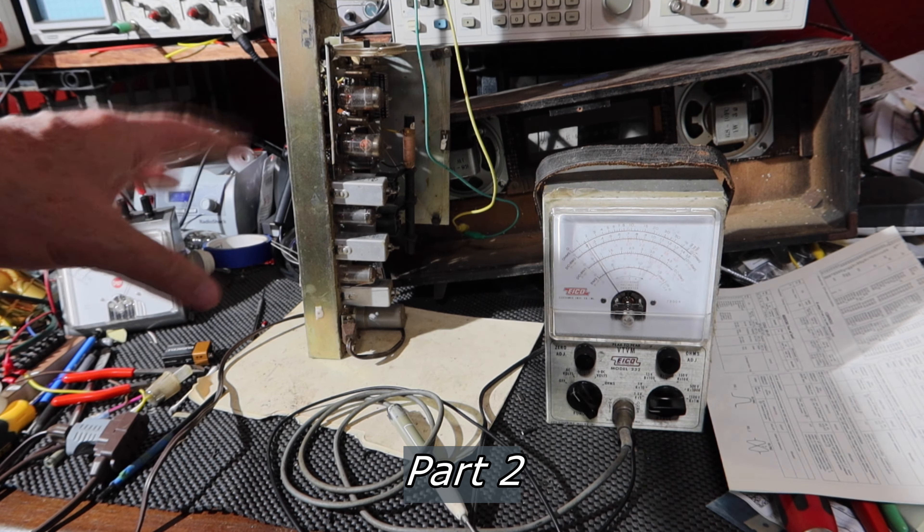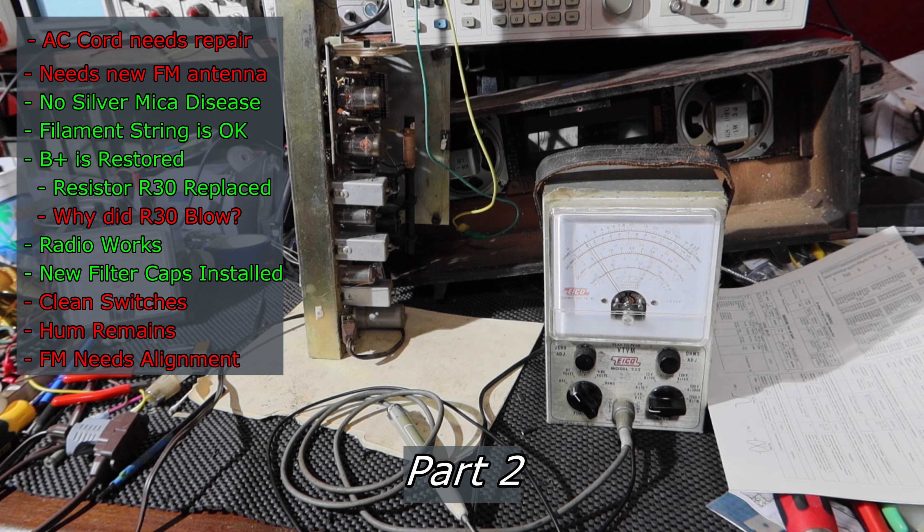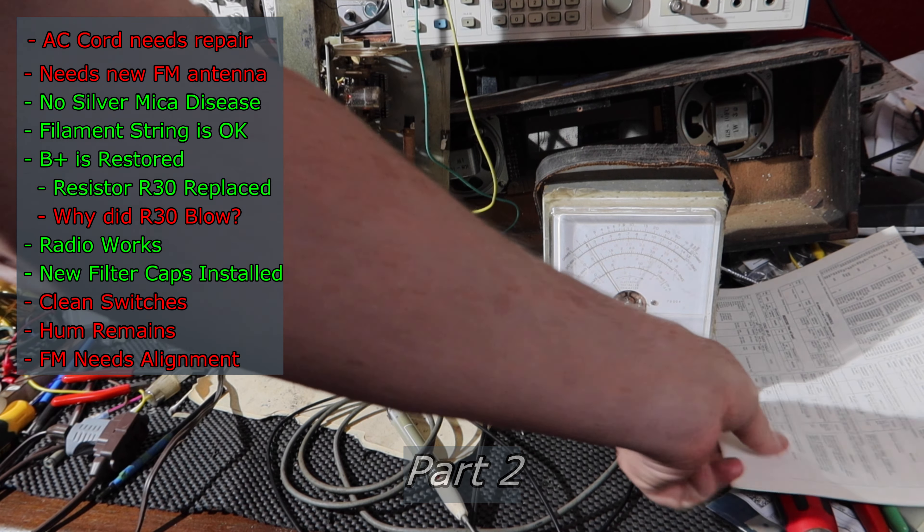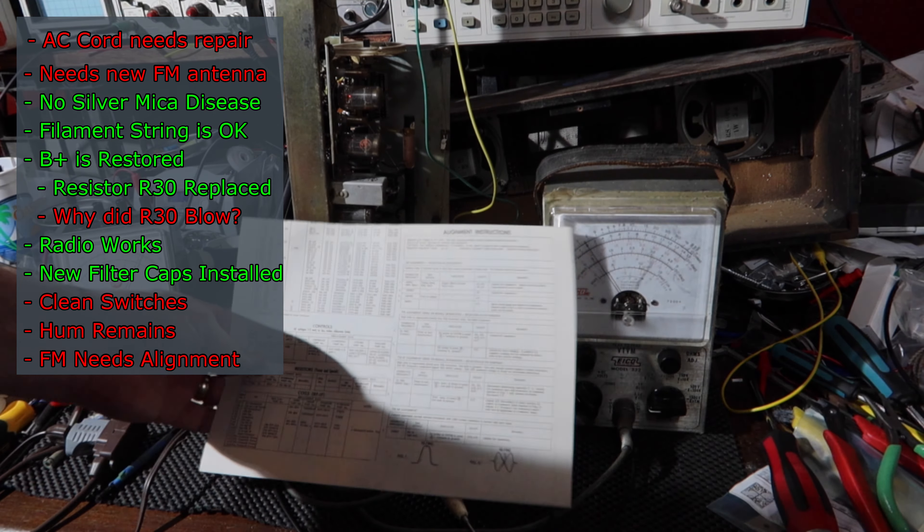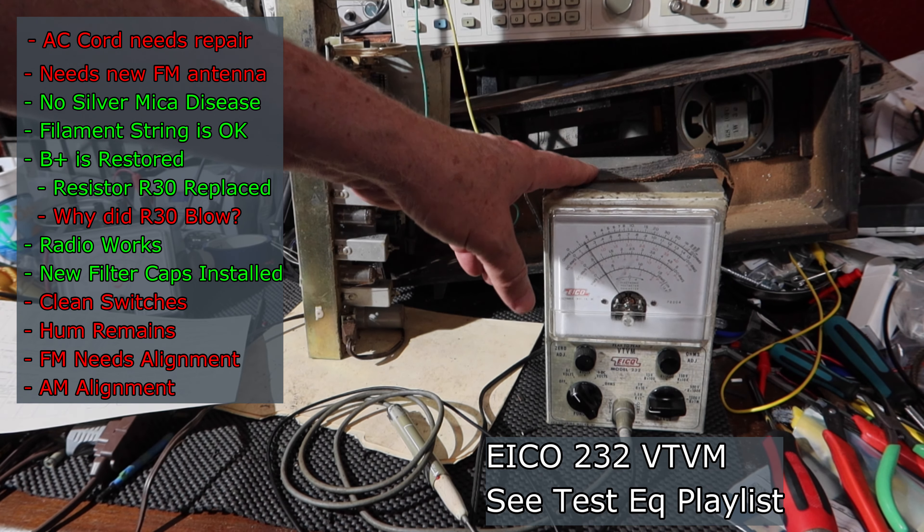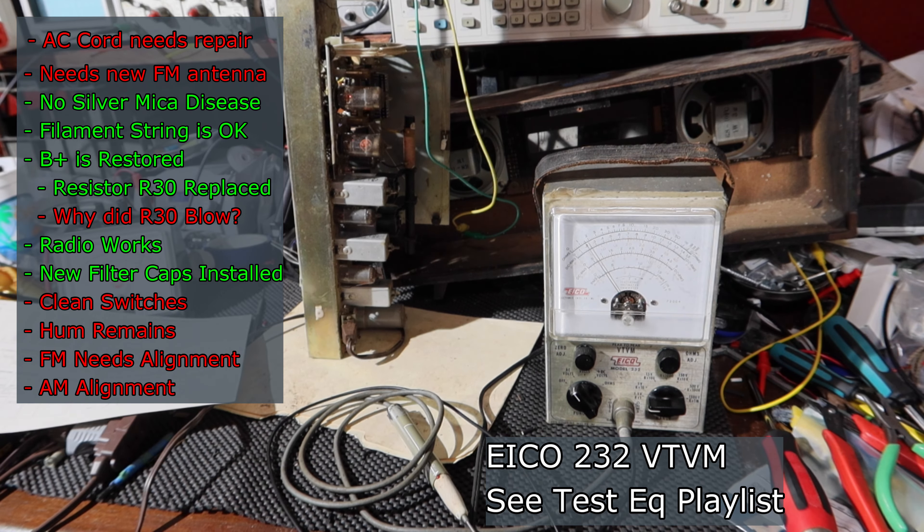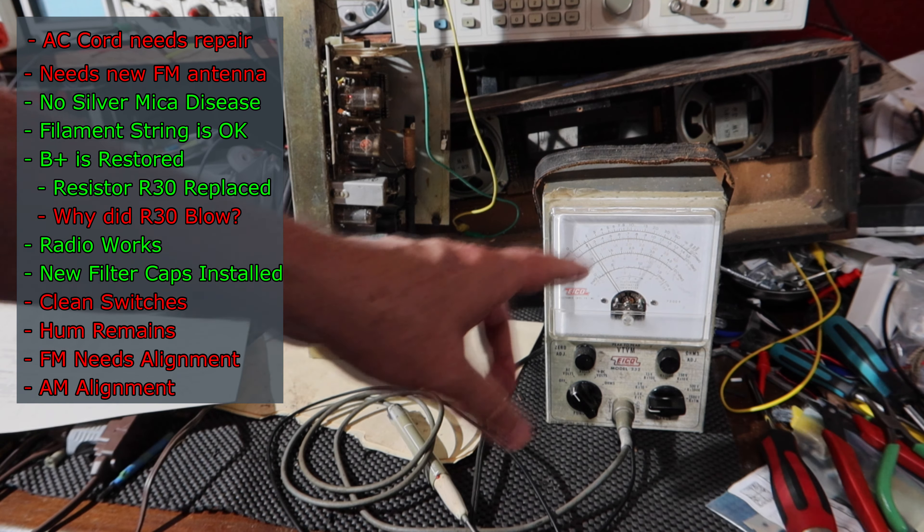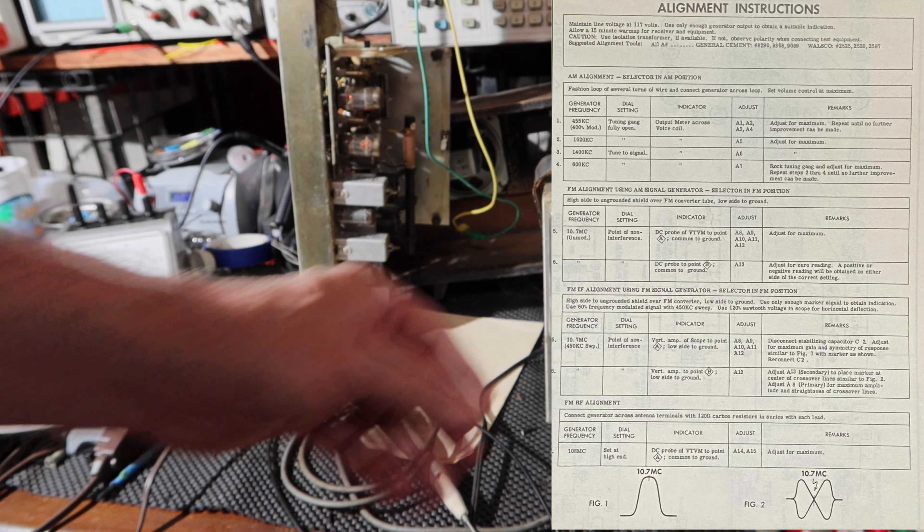Okay, so we've had this on for several hours and it's working just fine. And so it's time to start the alignment process. We've got the alignment instructions right here. So we're going to start with the AM side. I've got the vacuum tube voltmeter here. It's been warming up for a bit. I'm not really using the numbers, but I've been watching the sweep on the dial.